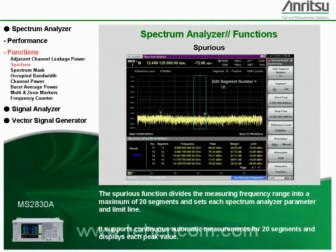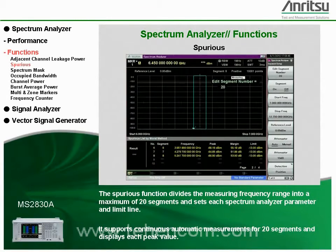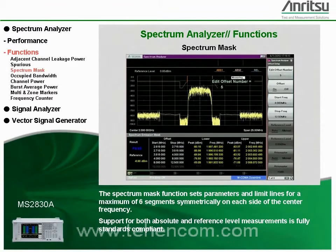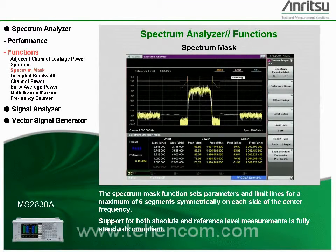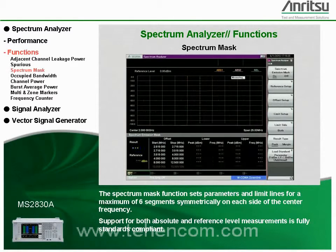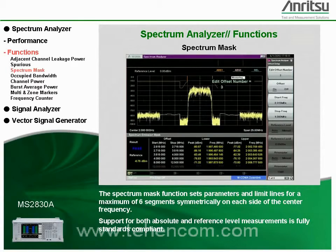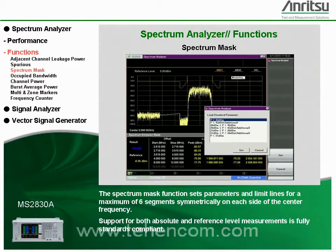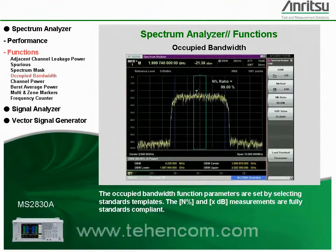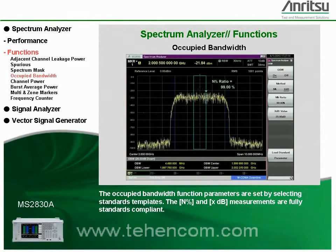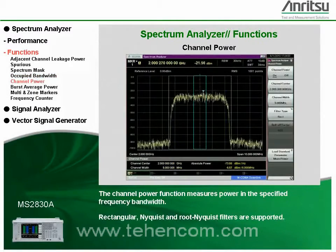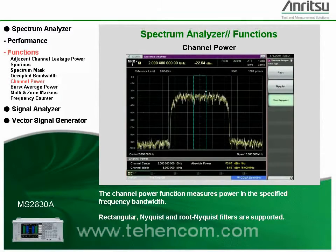It supports continuous automatic measurements for 20 segments and displays each peak value. The spectrum mask function sets parameters and limit lines for a maximum of six segments symmetrically on each side of the center frequency. Support for both absolute and reference level measurements is fully standards compliant. The occupied bandwidth function parameters are set by selecting standards templates. The N% and XdB measurements are fully standards compliant. The channel power function measures power in the specified frequency bandwidth.